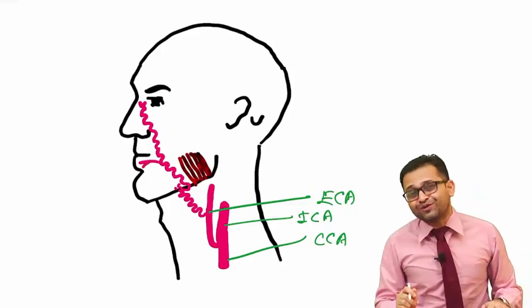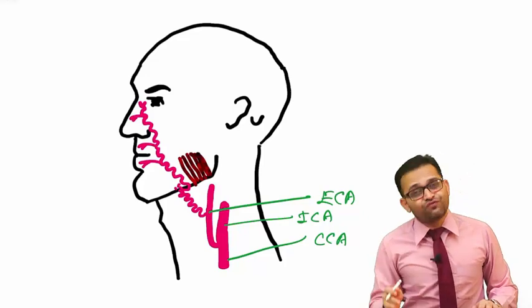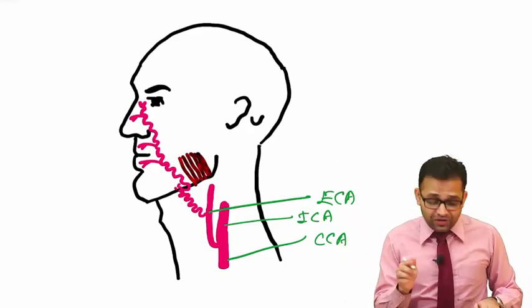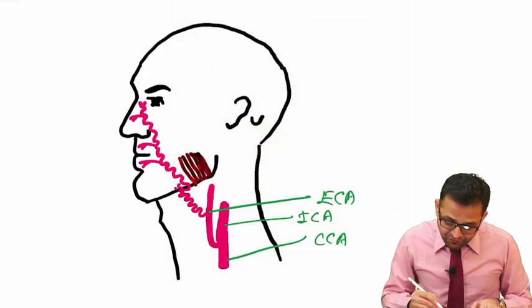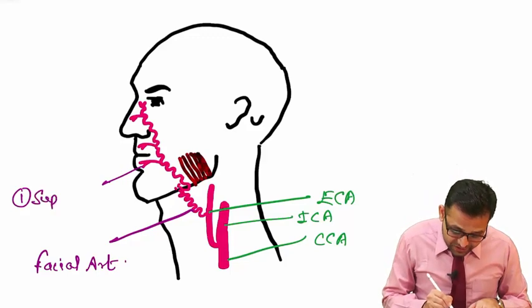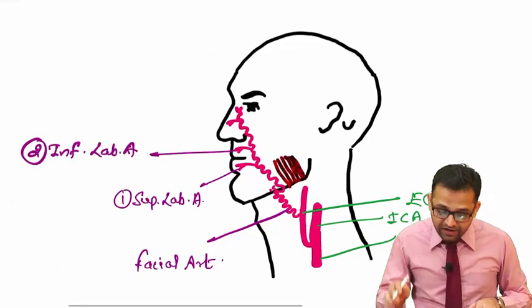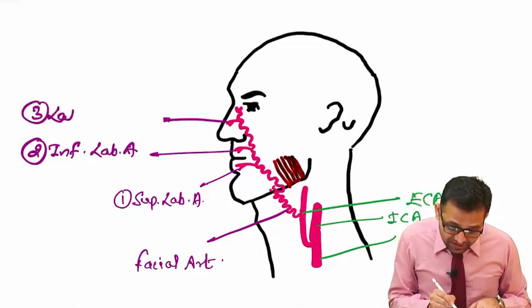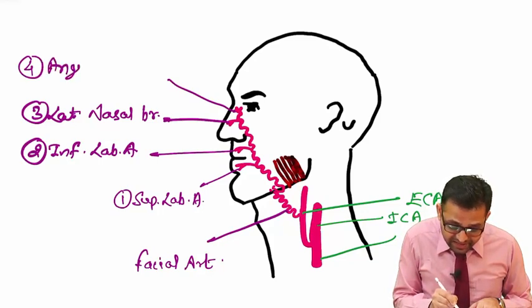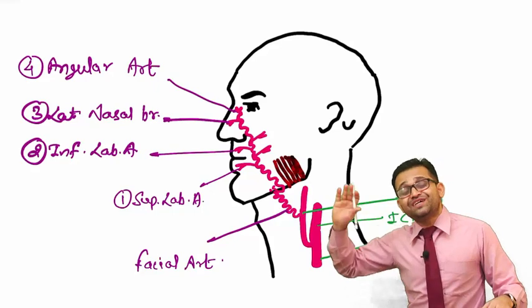The facial artery gives one branch to the lower lip — that is the inferior labial artery. It gives a branch to the upper lip — that is the superior labial artery. It gives a branch to the nose from the lateral side — that is the lateral nasal artery. And it terminates at the medial angle of the eye as our angular artery. These are the main branches from the facial artery, along with many unnamed muscular branches.